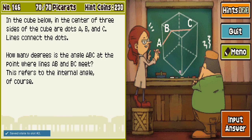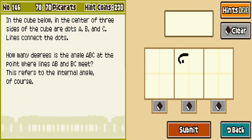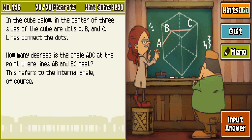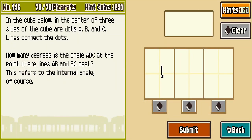Excuse me, what? 90. Is it 90? Of course not — it can't be that simple. What are you showing me here, game? You're giving me nothing to work with. I'm just looking at a random angle. I don't know. 100? I don't know. It looks obtuse to me.